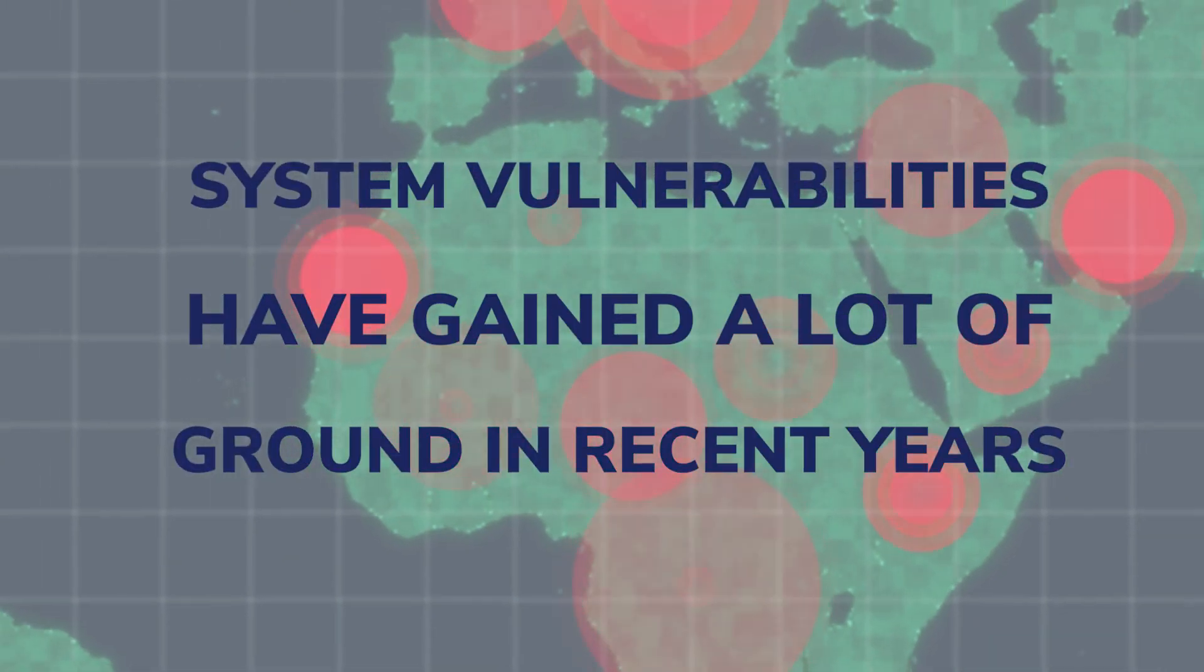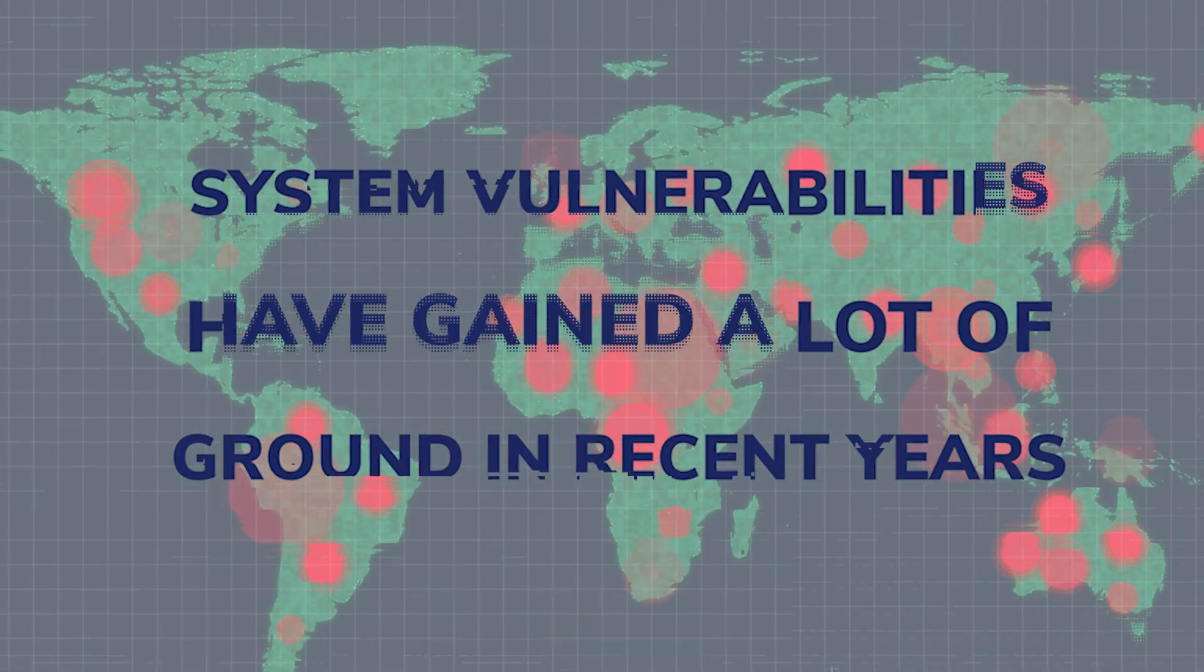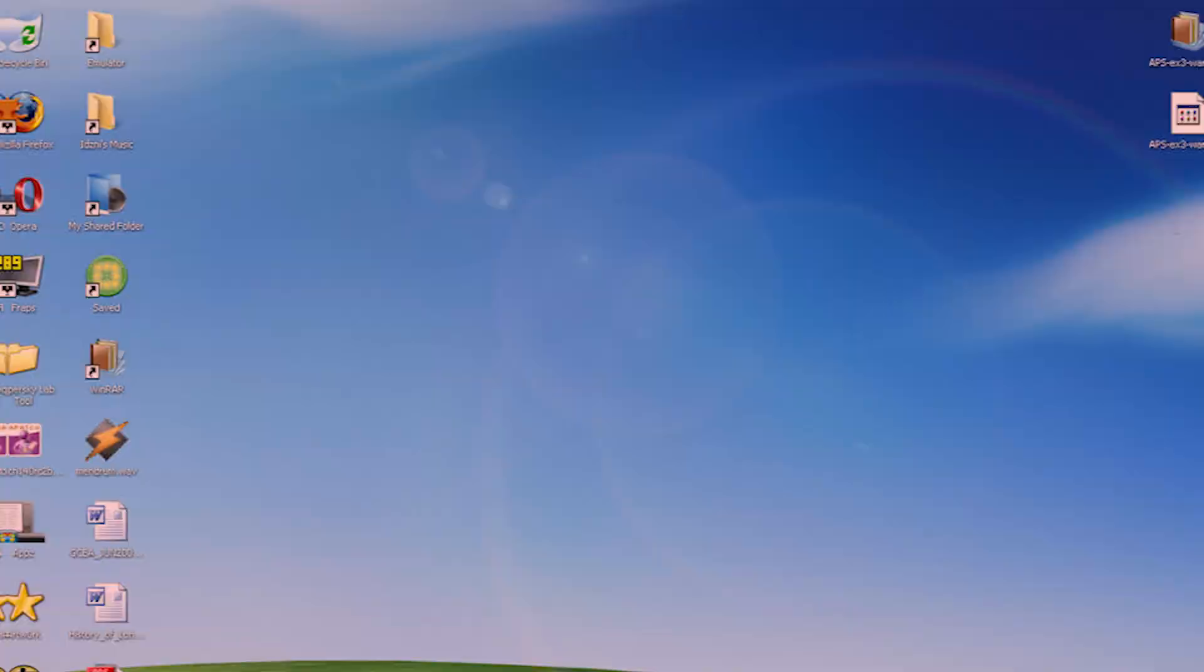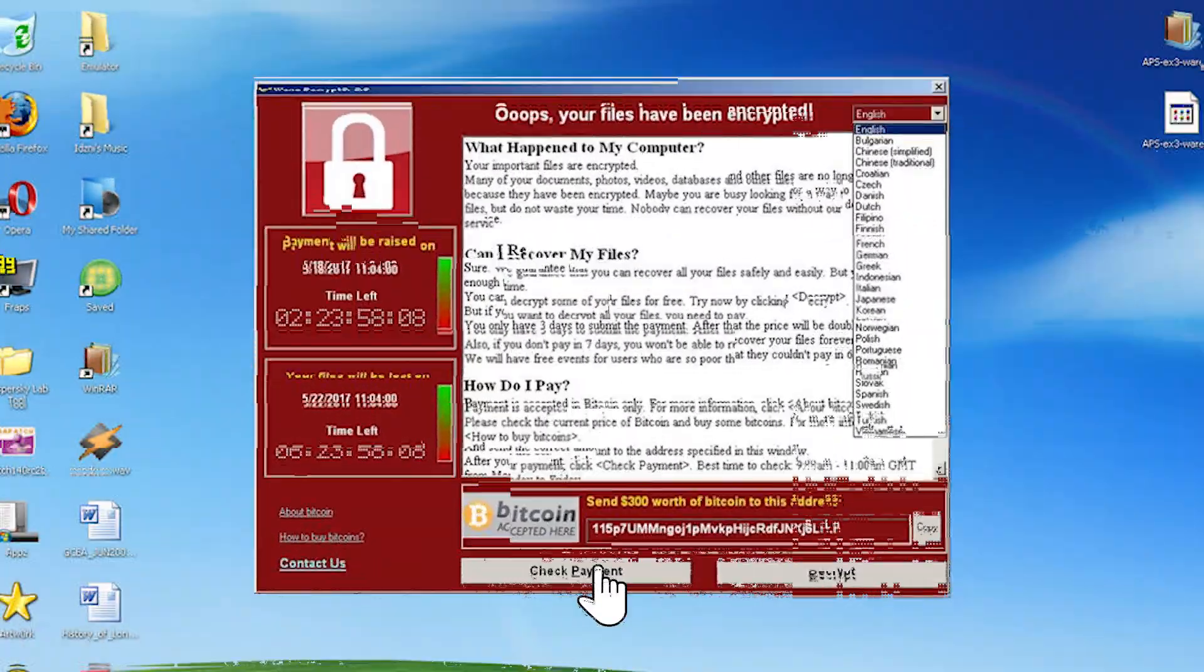It's worth mentioning from the beginning that system vulnerabilities have gained a lot of ground in recent years. One well-known example is the WannaCry ransomware attack that happened due to unpatched systems that ended up being exploited by malicious hackers.